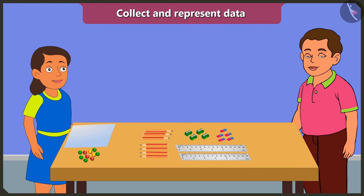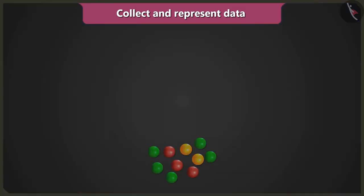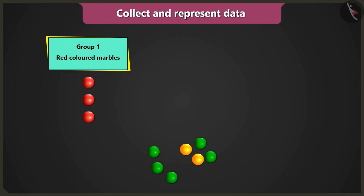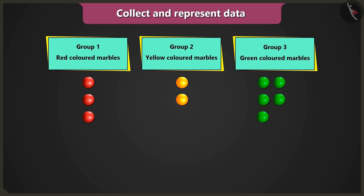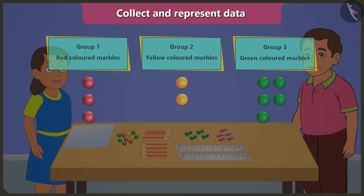Bubbly, first of all, you have to make groups of same colored marbles. First group of red colored marbles, second group of yellow colored marbles, and third group of green colored marbles.